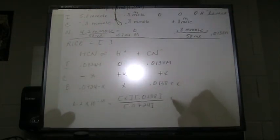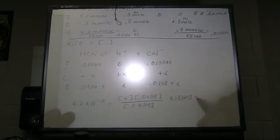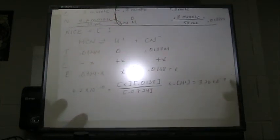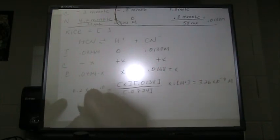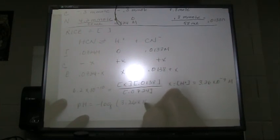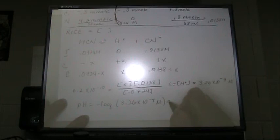Solving for x, which represents the hydrogen ion concentration, gives 3.26 times 10 to the negative 9 molar. The pH is equal to the negative log of that quantity, so the pH of that solution is 8.49.